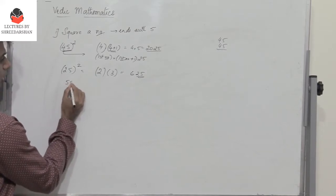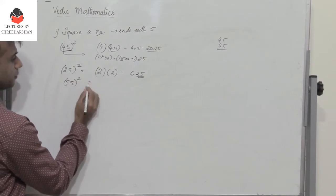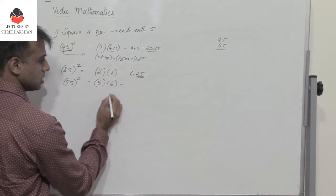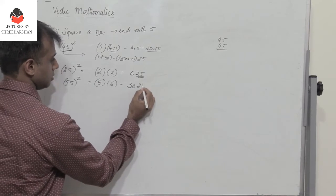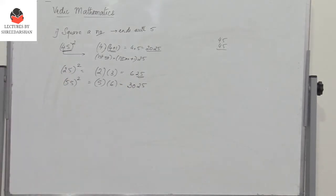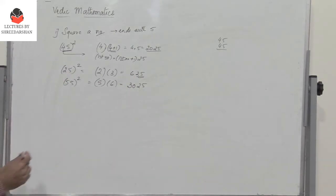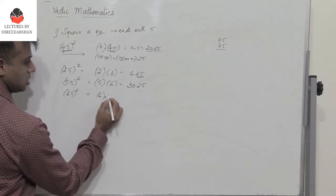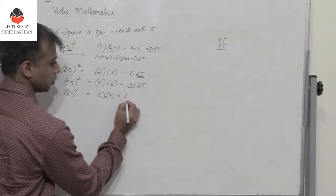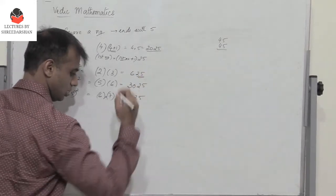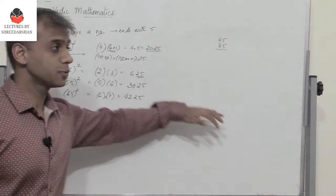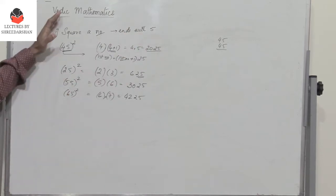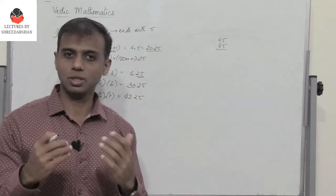Let's take 55 squared. Take the first number 5, multiply it with 5 plus 1 which is 6, so 5 into 6 is 30, attach 25 — you get 3025. Let's take 65 squared: 6 into 7 is 42, attach 25 and you get the answer. So a very simple way to find the square of any number ending with 5 using Vedic mathematics — you will get the answer within seconds.